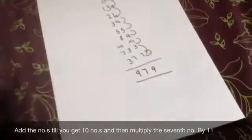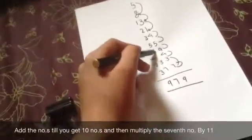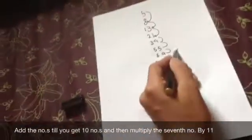So now from the starting count 7: 1, 2, 3, 4, 5, 6, 7. And the 7th digit you multiply by 11.